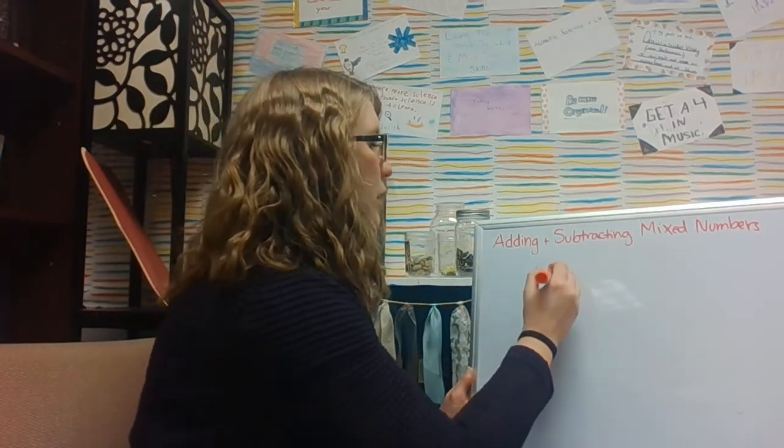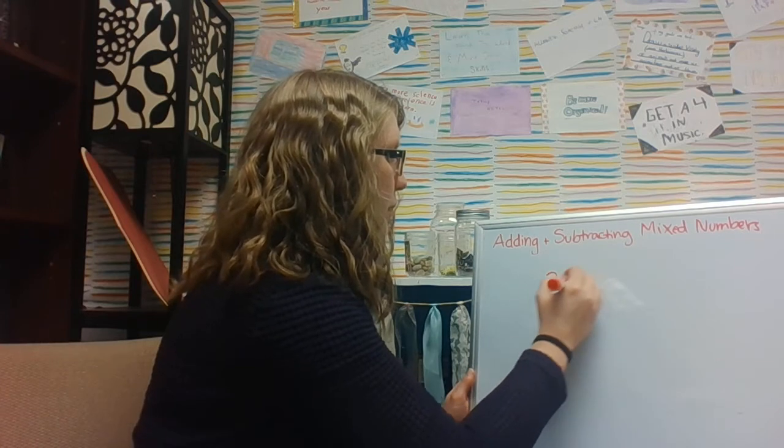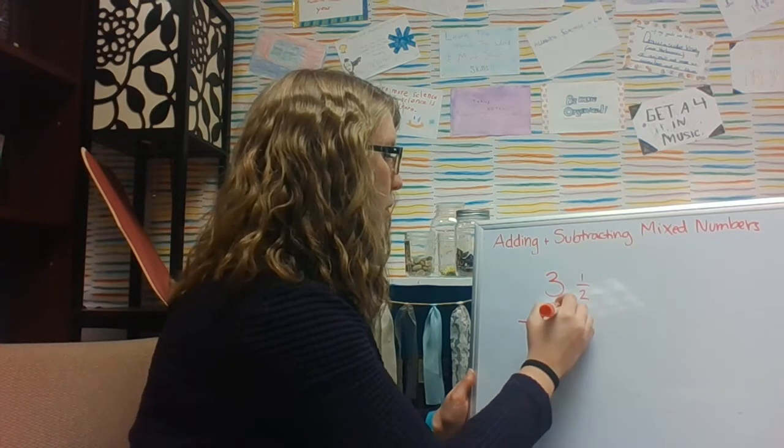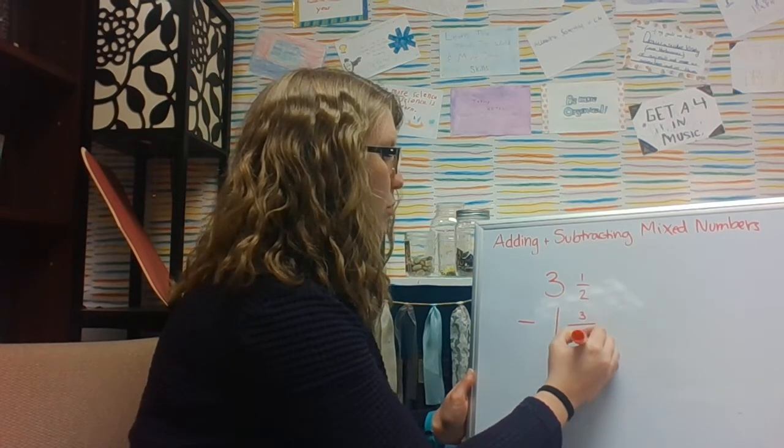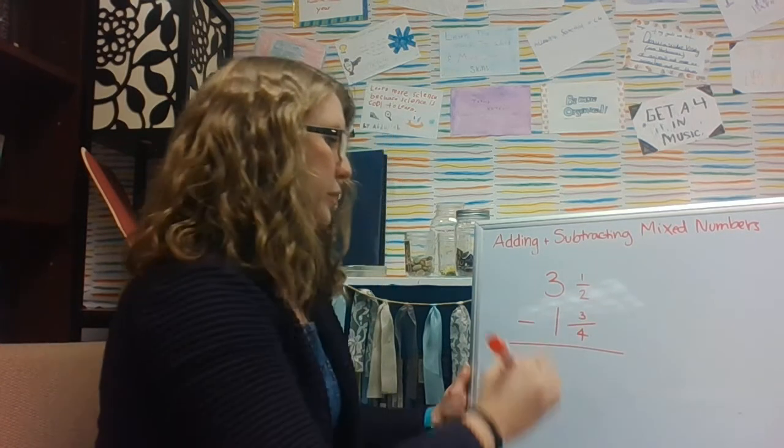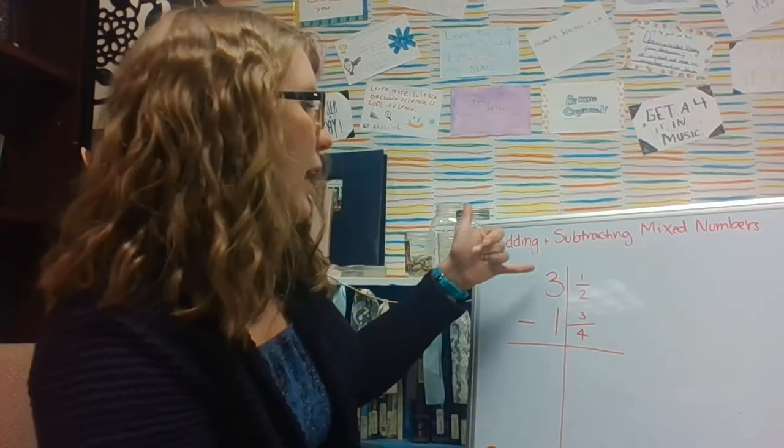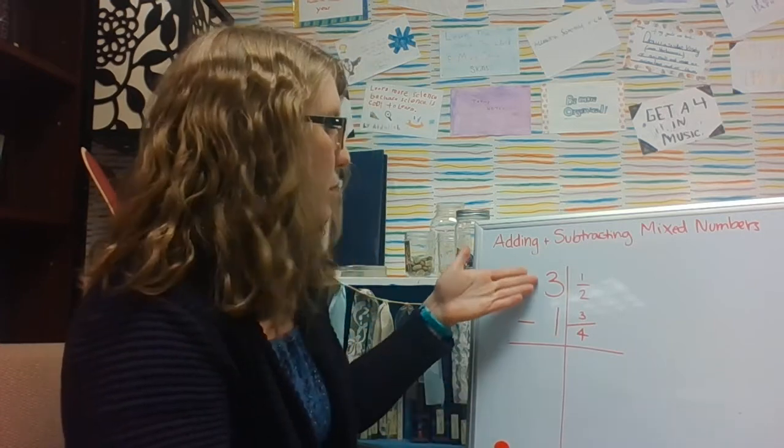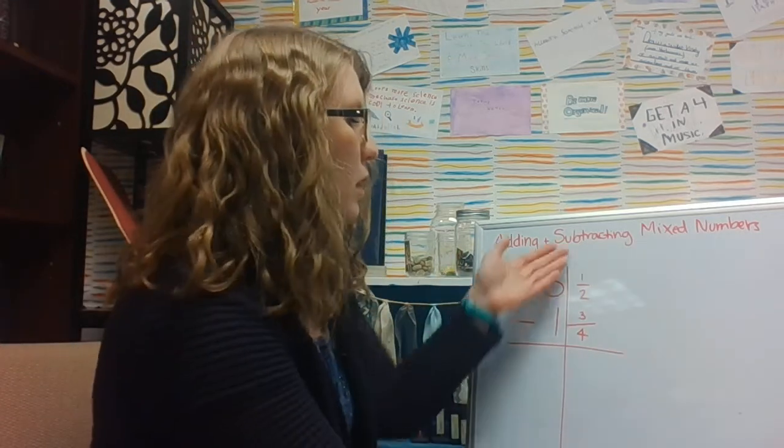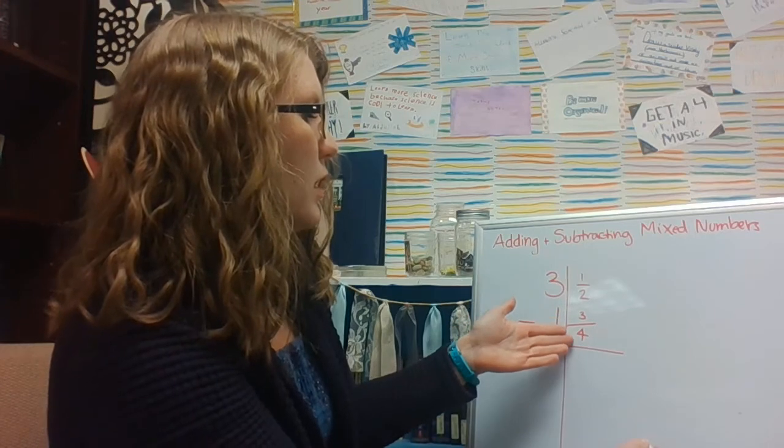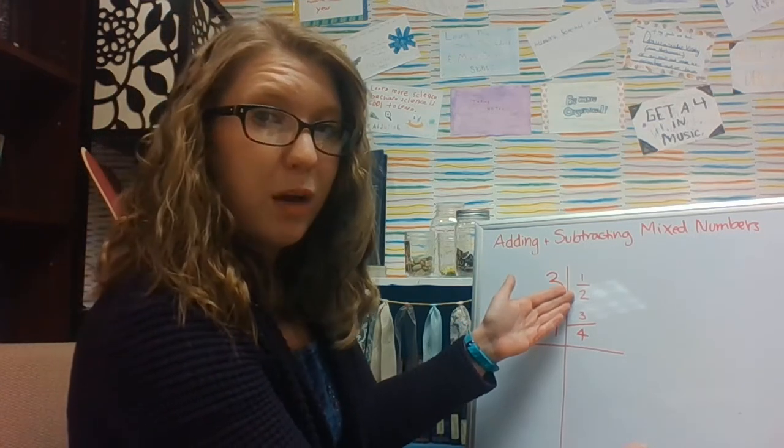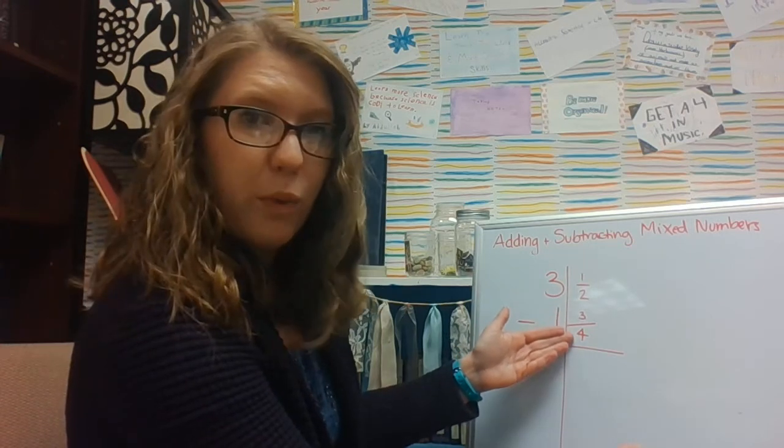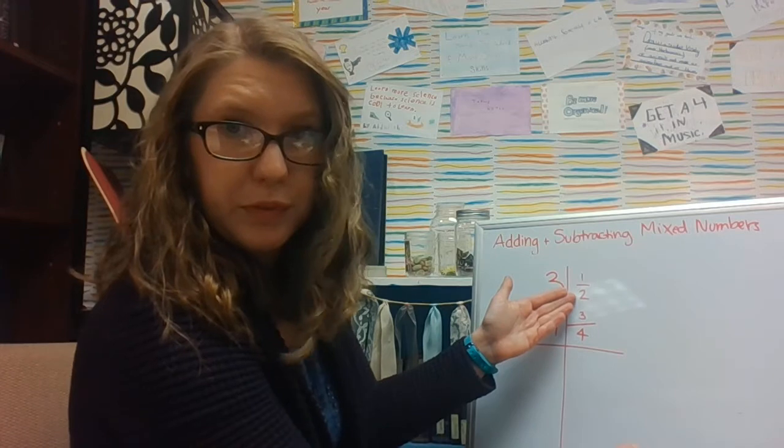Now if I had something like 3 and 1/2 minus 1 and 3/4, I can go ahead and kind of keep them separate if I want to, thinking about 3 minus 1 is 2, and then I go to this one and try to take away 3/4 from 1/2. The problem with that is that I can't take away 3/4 from 1/2 nicely.